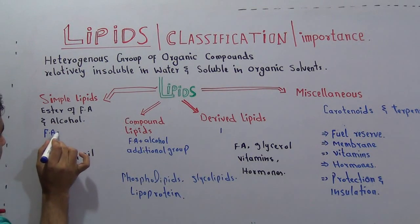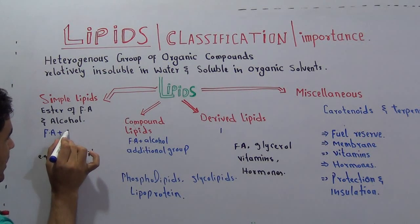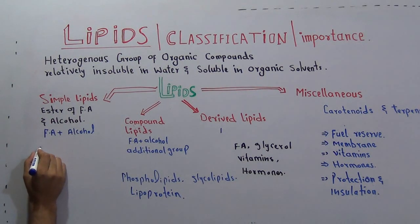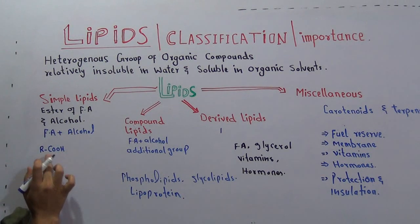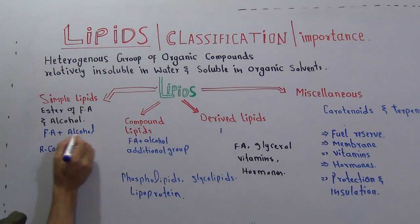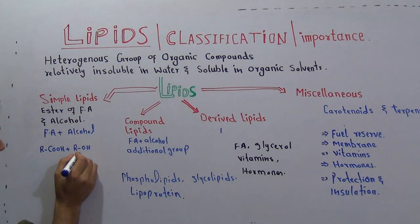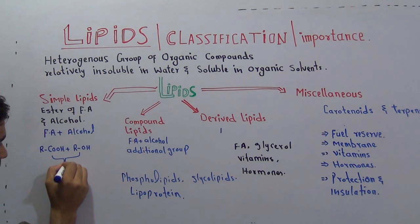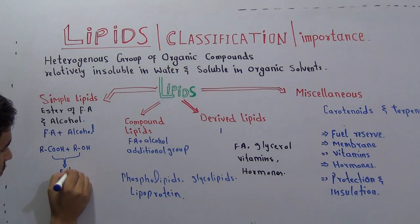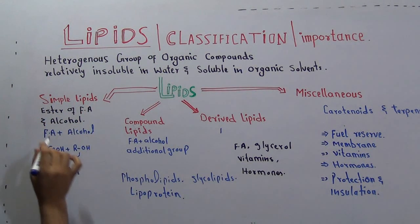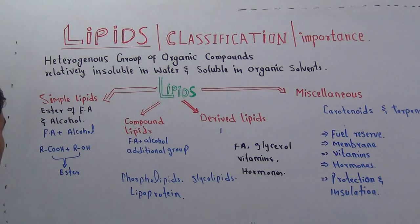For simplicity, if I indicate the fatty acid as R-C-O-O-H, this is a simple presentation of the fatty acid. And if it is combined with alcohol, which can be written as R-OH — a single OH group — whenever these two compounds combine together, they will give us a new family of compound called an ester. So simple lipids are actually the ester of fatty acid and alcohol.